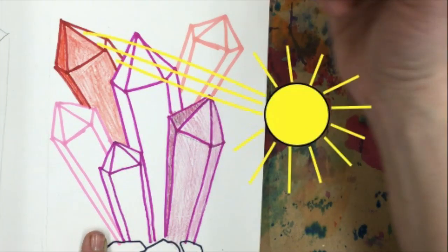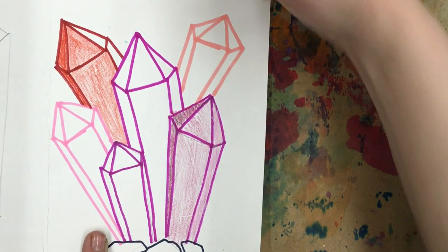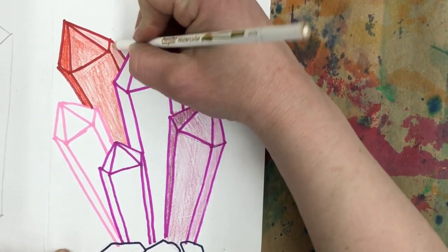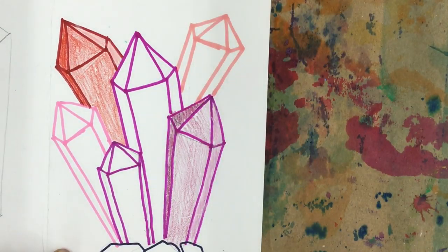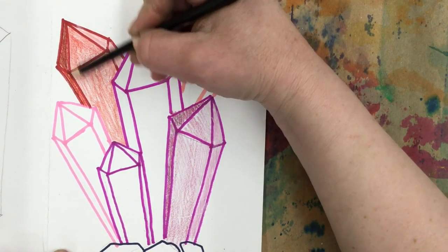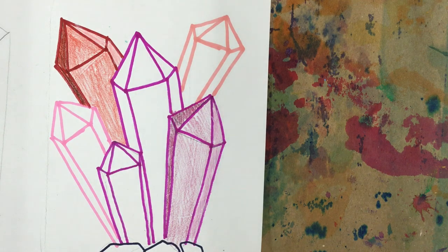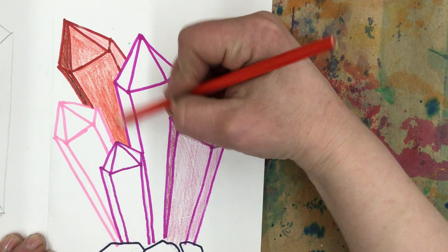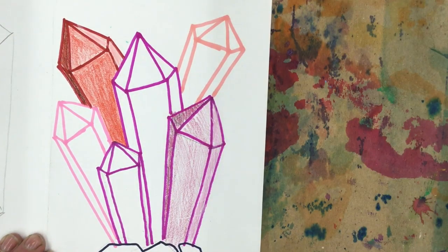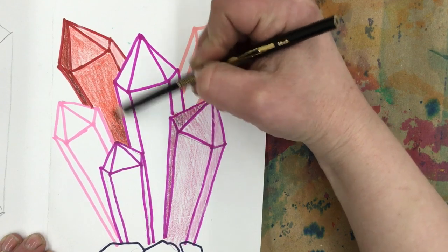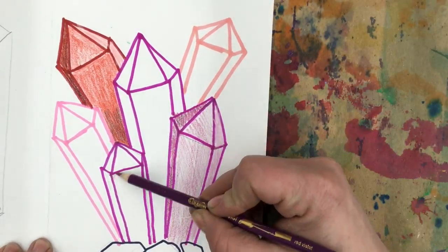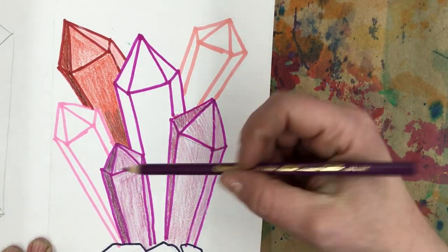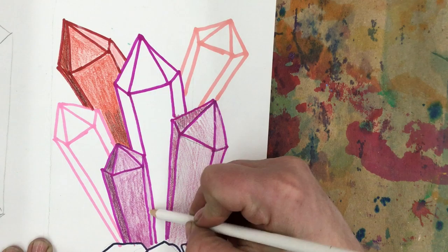My tint is the lightest side closest to the sun. Always check your crystals. I did it again, my medium value is still not dark enough, so I need to darken this part. Remember, when it's a group, always put the tint on the same side and the shade on the same side so that they all match.